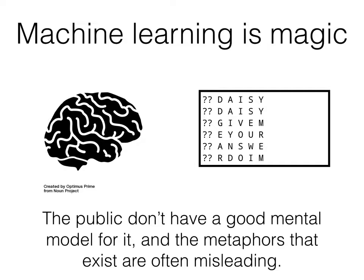By contrast, machine learning is effectively wizard magic from space. For a lot of people, it might as well be that a wizard descended from Mars three years ago and just imbued technology with this magical power. The public, in general, do not have a very good mental model for what machine learning is. Journalists often don't have a good model for it either. And the metaphors we do use — even words like 'learning' or 'neural network' — are pretty misleading and lead people to extrapolate and exaggerate certain qualities.